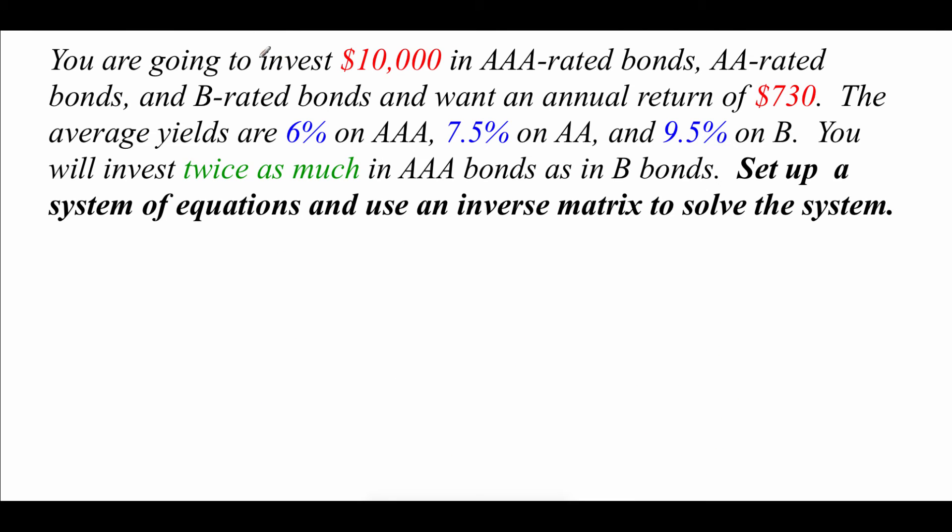Last example we've got is a little bit of an application type problem. We're doing some investing. We've got $10,000. We're going to invest in AAA-rated bonds, AA-rated bonds, and B-rated bonds and want an annual return of $730. The average yields are 6% on AAA, 7.5% on AA, and 9.5% on B. We're going to invest twice as much in AAA bonds as in B bonds. So what we're going to do is take all of this information, set up a system of equations, and then solve it using inverse matrices.